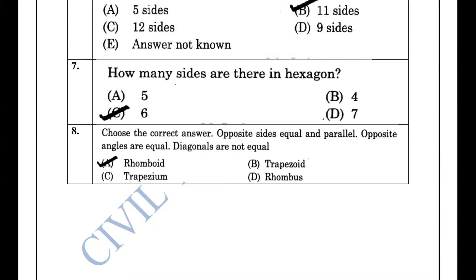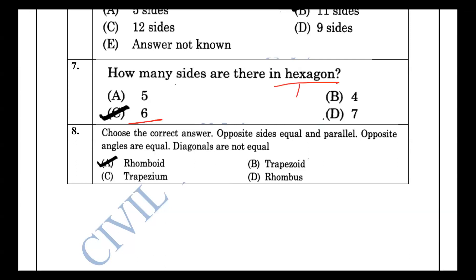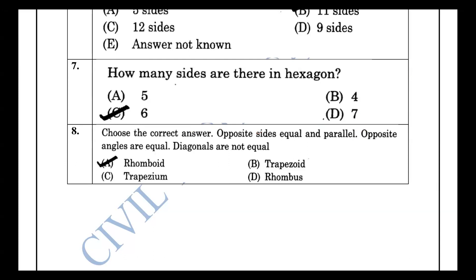The hexagon has 6 sides. For a parallelogram, the opposite sides are equal and parallel, the opposite angles are equal, and the diagonals are not equal.